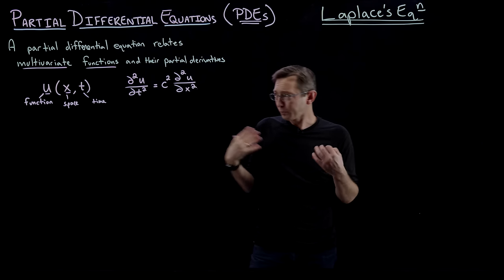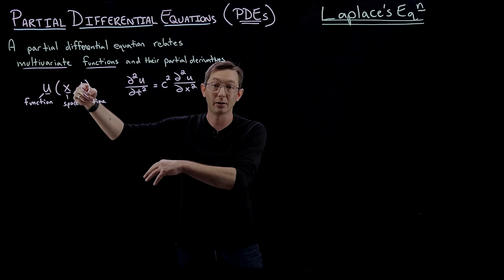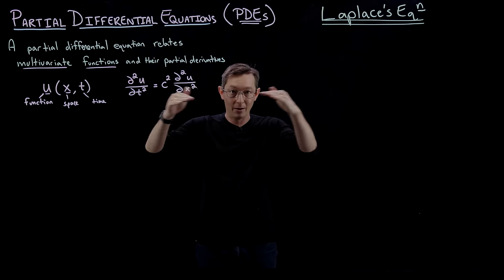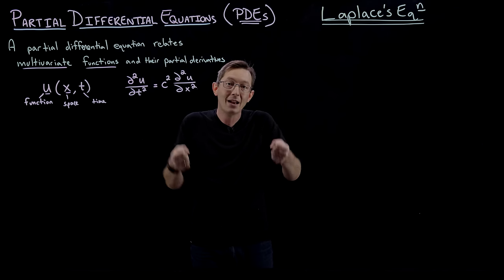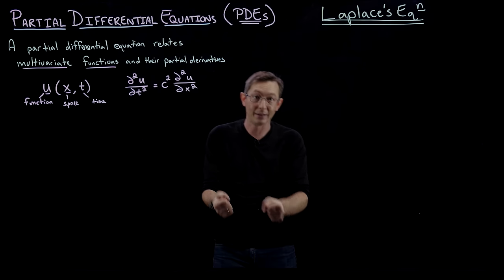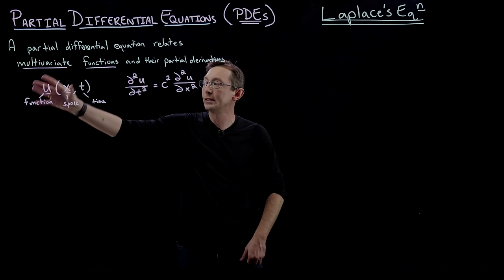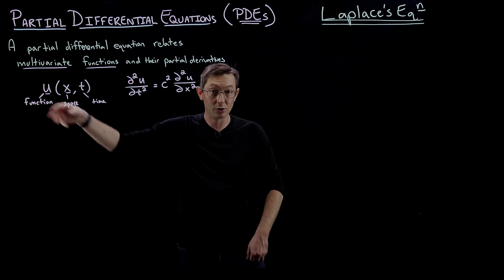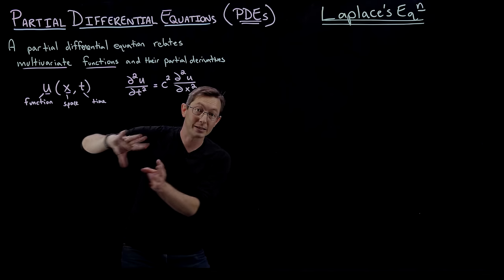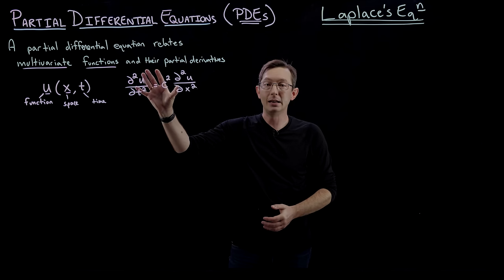To actually solve these things you absolutely need initial conditions — you need to know what the initial state of your system is at time zero — and you need to know what boundary conditions you have. If I have a plate of metal and I want to know its temperature distribution, I need to know the temperatures at the edges: are they insulated, or is one edge in a cold bath and the other in a hot bath? Those are important. The goal is to solve for the function U, whether it's a temperature distribution or a vector of functions like the velocity field of a fluid.